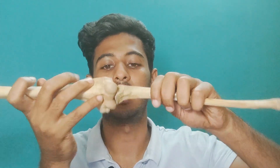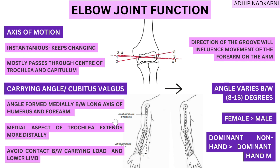The carrying angle is mainly formed due to the medial aspect of the trochlea, which extends more distally. As it articulates, this causes the characteristic angulation. The reason we have this carrying angle is to avoid contact between the load you are carrying and the pelvis or lower limb — if the elbow were straight, an object carried in your hand would hit your leg when walking.